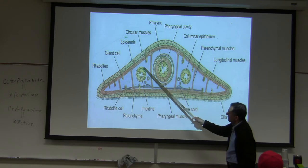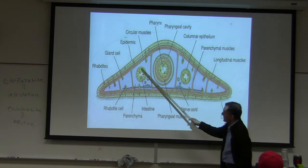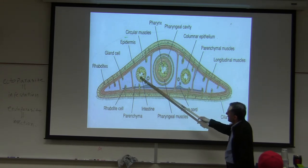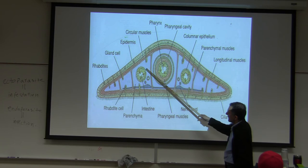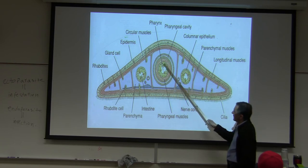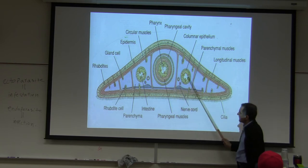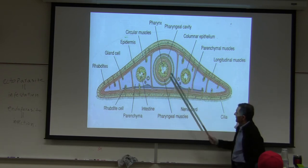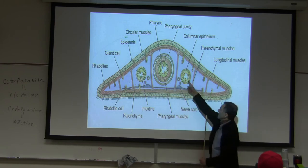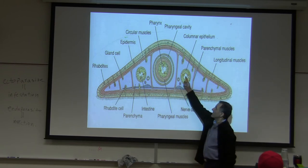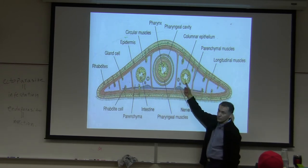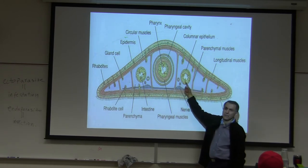All of this area, except this one, came from epidermis and endodermis, which is the gut. Endodermis came from the gut — gastrovascular cavity, gastrodermis.